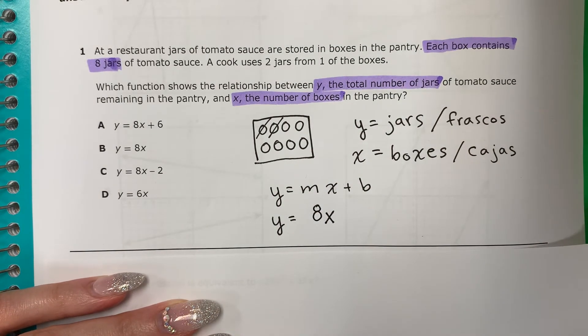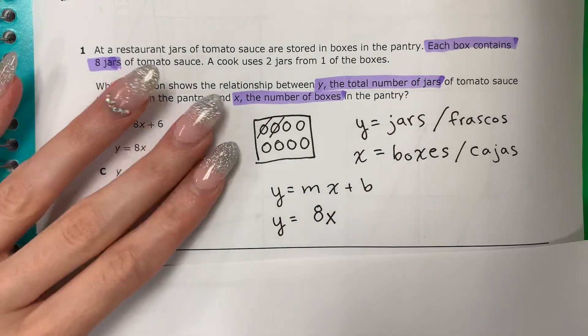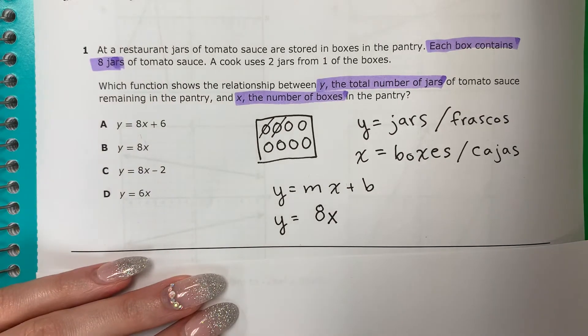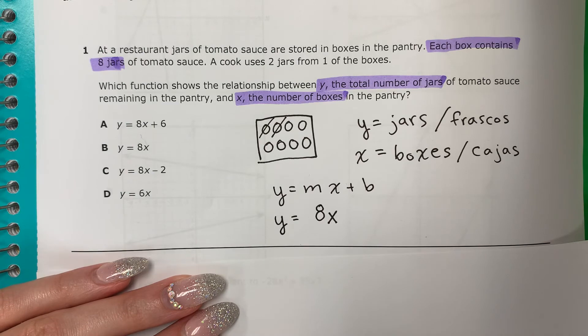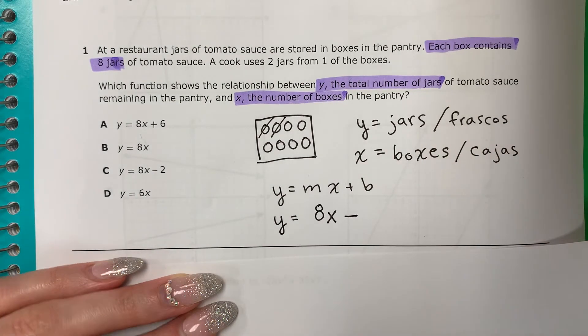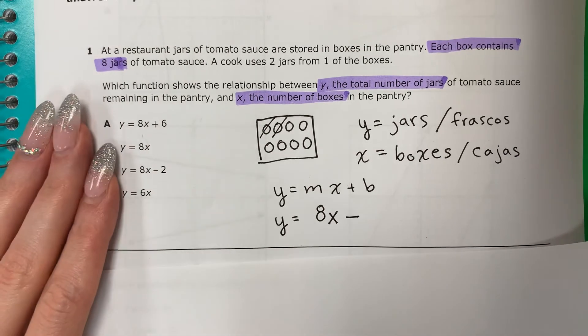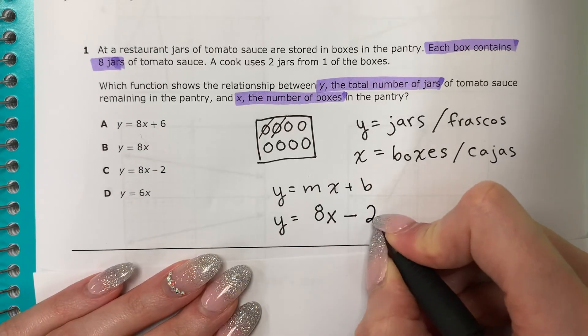And then I used 2 jars. Usa 2 frascos. So use, usa, that's more or less. Es más o menos. It's less, es menor. So I'm going to do minus. How many did he use? ¿Cuántos frascos usa el cocinero? He used 2. So I'm going to do minus 2.